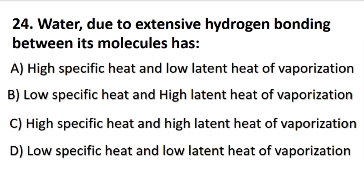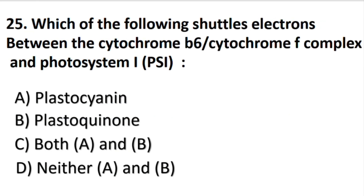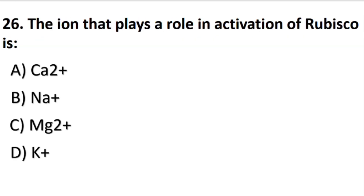Water, due to extensive hydrogen bonding between its molecules, has — the answer is C part: high specific heat and high latent heat of vaporization. Which of the following shuttles electrons between the cytochrome b6/f complex and photosystem I? The answer is A part: plastocyanin. The ion that plays a role in activation of RuBisCO is — C part: magnesium.